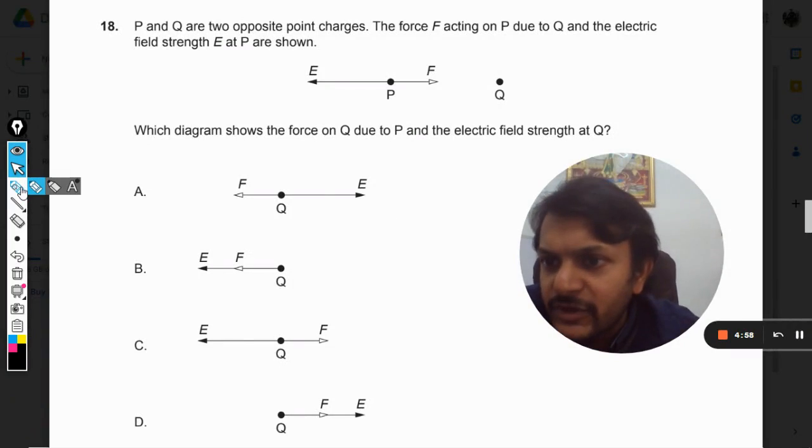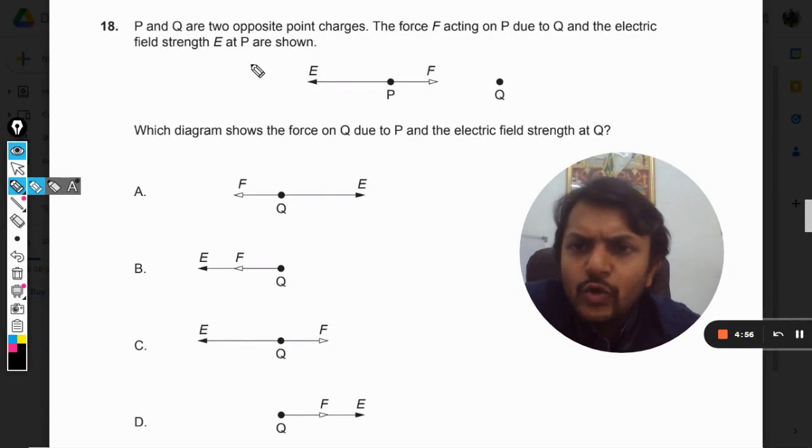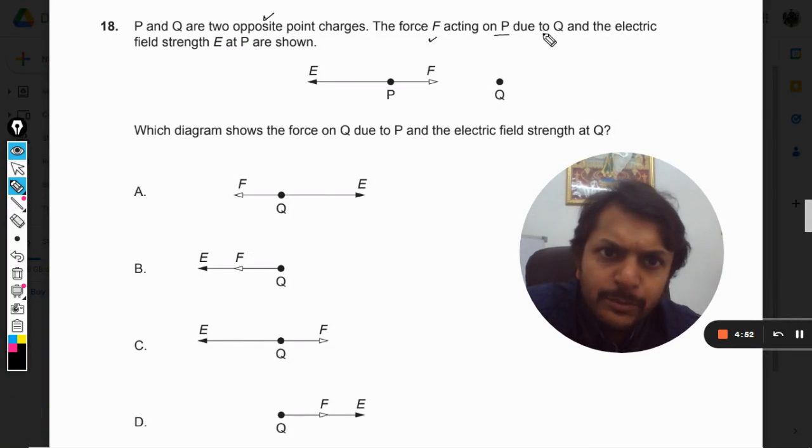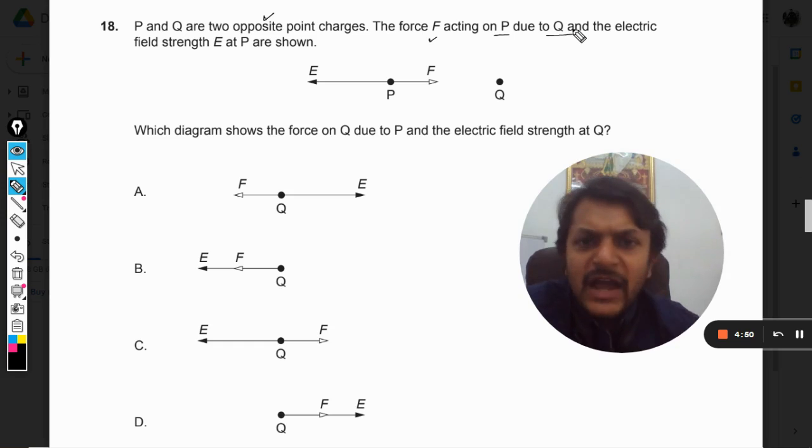Okay dear students, let us see what is there in this question. P and Q are two opposite point charges. The force F acting on P due to Q, that is attractive force because both of the charges are of opposite sign. The electric field strength E at P are shown. So the electric field is also shown.